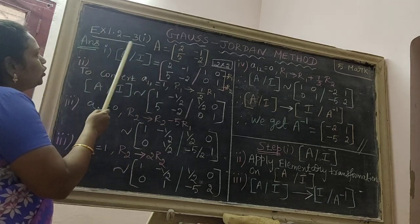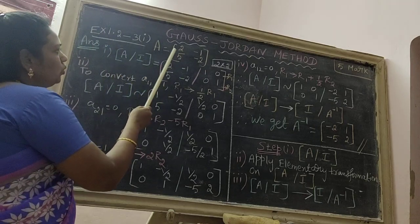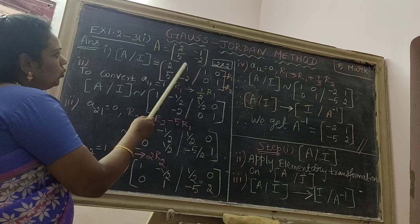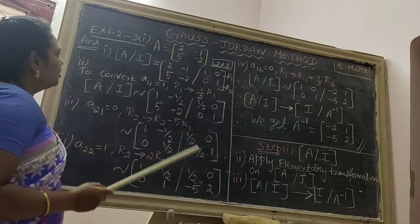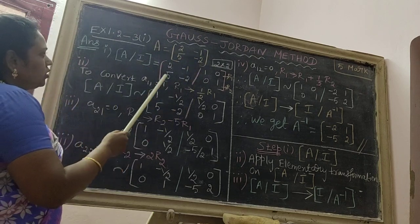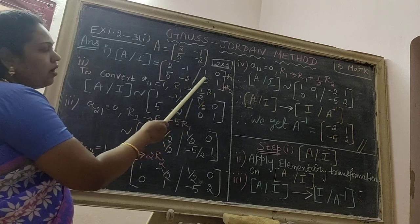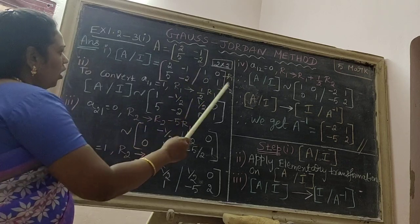Exercise 1.2, third subsection. A equal to 2 minus 1, 5 minus 2. It is 2 cross 2 matrix. Step 1, A bar i. Substitute A bar i, means here i2, R1, R2.